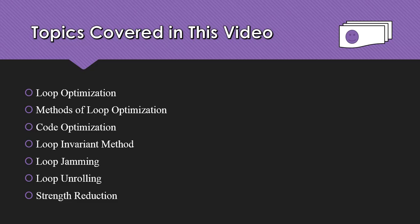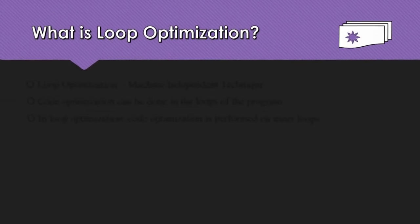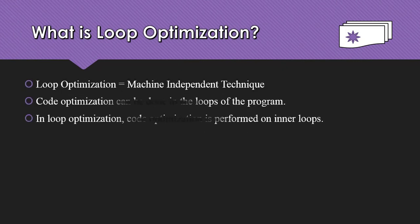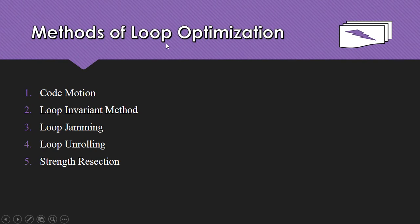We will start with what is loop optimization. This is a machine-independent technique where we can optimize the code in the loops of the program. Mostly we will do the optimization on the inner loops of the program or in the source code.